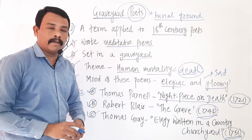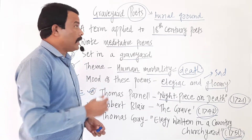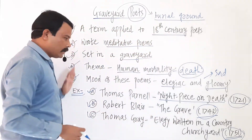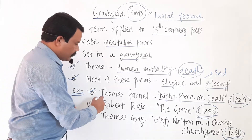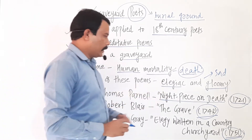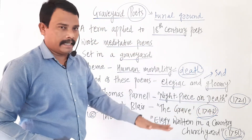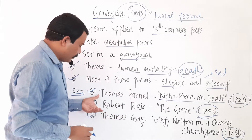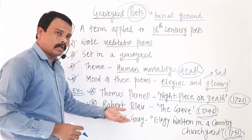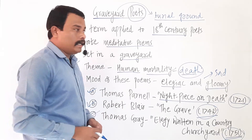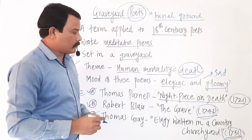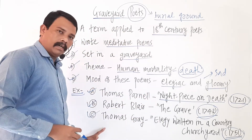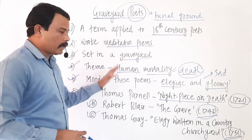In this way I have explained the concept of Graveyard Poets. In different examinations, questions may be asked on this. For example: who is the author of 'Night Piece on Death'? In SET and NET exams such questions can be asked, so you must know Thomas Parnell, Robert Blair, and Thomas Gray. This group of poets is associated with the term Graveyard Poets, so remember the titles of the poems and the names of the authors.